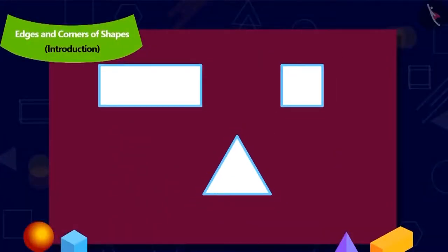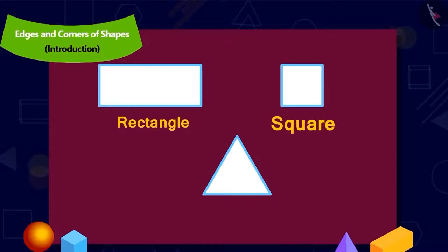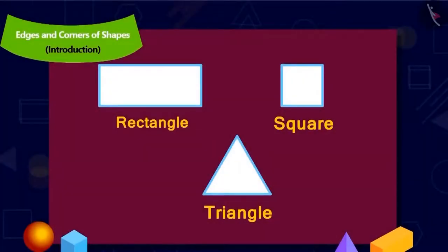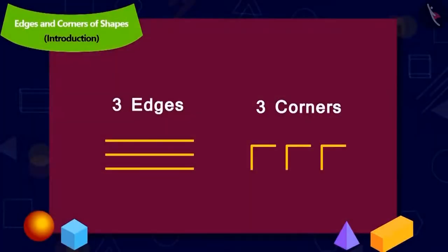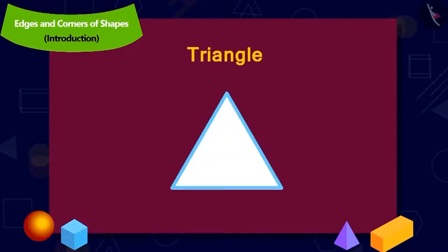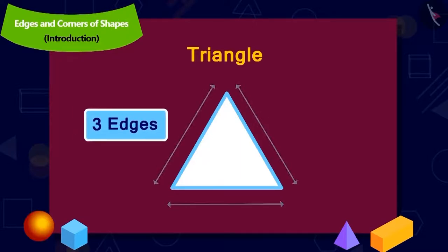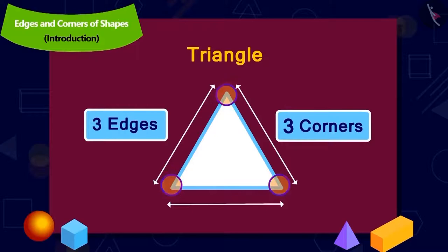Uncle made three shapes on paper. Children, do you recognize these shapes? Yes! This is a rectangle, this is a square, and this is a triangle. Uncle asked Chanda to recognize the object with three edges and three corners. The answer is a triangle — a triangle has three edges and three corners.